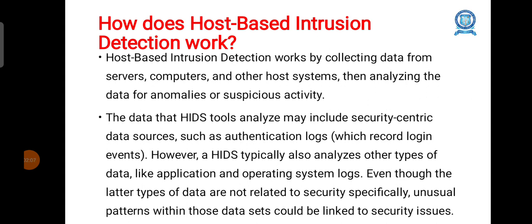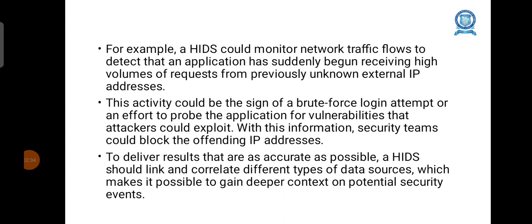The data that HIDS tools analyze may include security-centric data sources such as authentication logs. However, a HIDS typically analyzes other types of data like application and operating system logs. Even though these later types of data are not related to security specifically, unusual patterns within those data sets could be linked to security issues. For example, a HIDS could monitor network traffic flows to detect that an application has suddenly begun receiving unusual requests — this activity could be the sign of a brute force login attempt or an effort to probe the application for vulnerabilities that attackers could exploit.